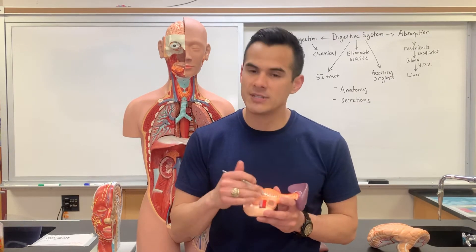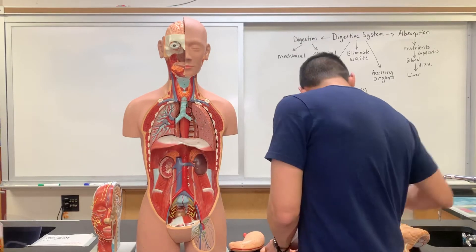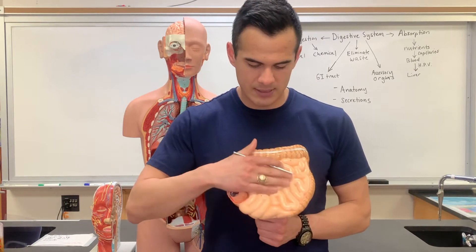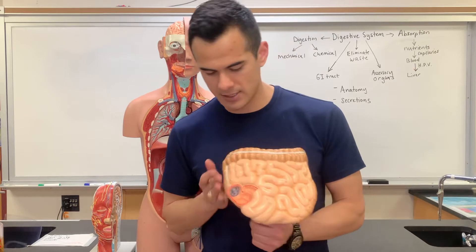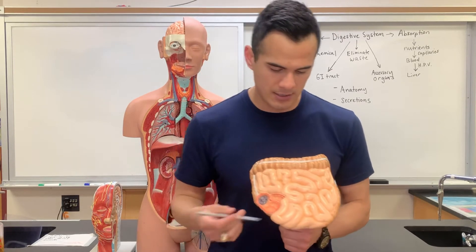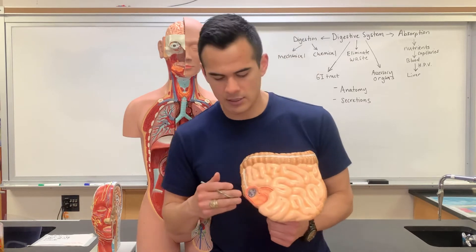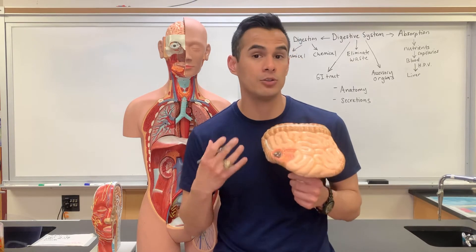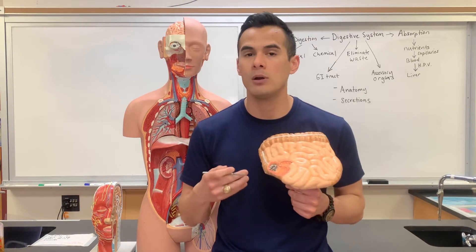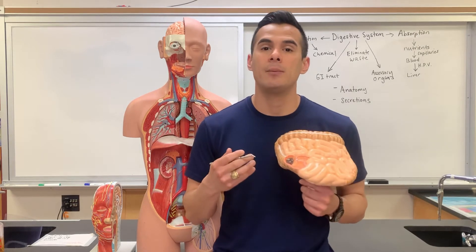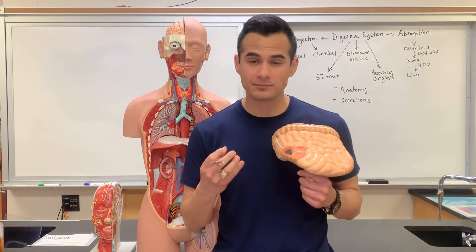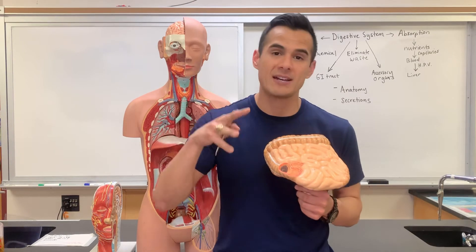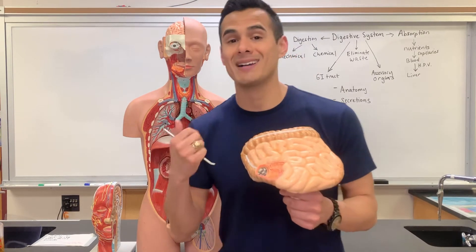The chyme travels through the small intestine and then eventually gets into the large intestine. In order to absorb nutrients, capillaries are found within the small intestine. Those capillaries absorb the nutrients that pass through, and from there we need to transport them back to the liver.